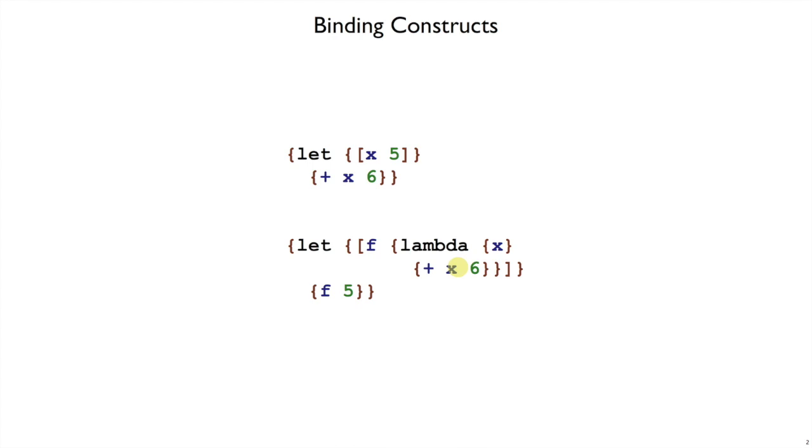These are very similar, as we've seen in our interpreter. For let, it involves extending an environment and then interpreting a body expression. Similarly, in our interpreter for function application, that involves binding a variable in the environment and then evaluating a body.